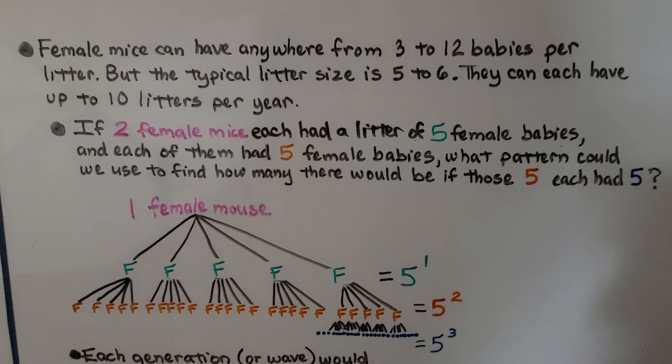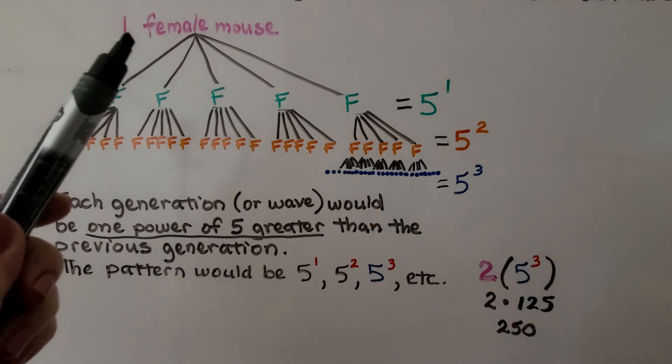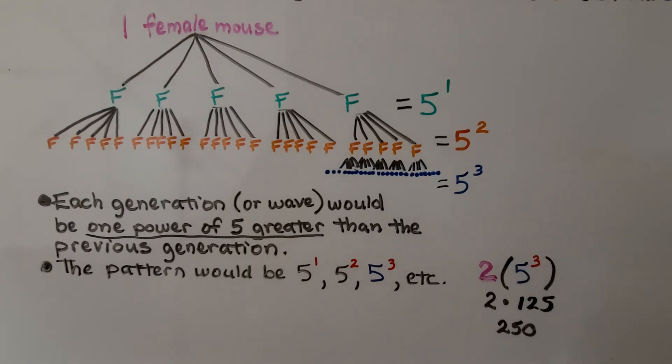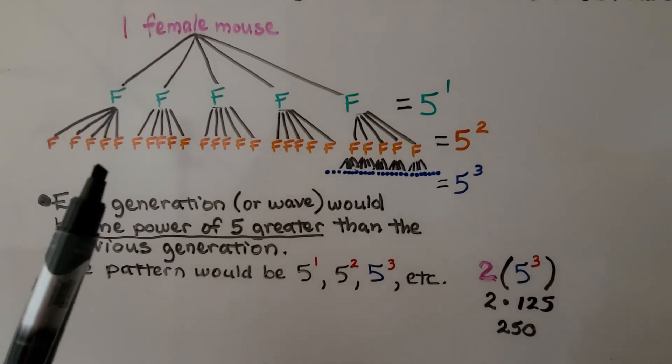Female mice have anywhere from 3 to 12 babies per litter each, but the typical litter size is 5 to 6. They can each have up to 10 litters per year. That's a lot of mice. If two female mice each had a litter of 5 babies, and each of them had 5 female babies, what pattern could we use to find how many there would be if those 5 each had 5? So here we have one female mouse. So the question was asking about 2. So let's figure out 1 and see what happens.